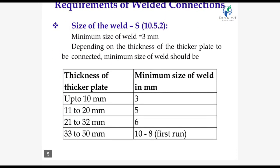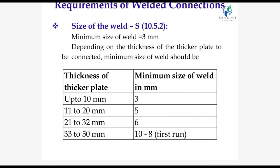Requirements of welded connection — size of weld: According to IS 800 clause 10.5.2, the minimum size of weld should be 3 mm. Below 3 mm, welding cannot be provided at any joint. Regarding maximum size: depending on the thickness of the thicker plate, for plates up to 10 mm thick, the minimum weld size is 3 mm; for 11 to 20 mm plates, minimum size is 5 mm; for 33 to 50 mm plates, minimum size is 8 to 10 mm.